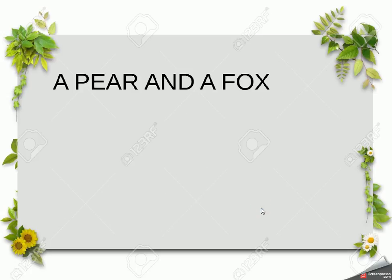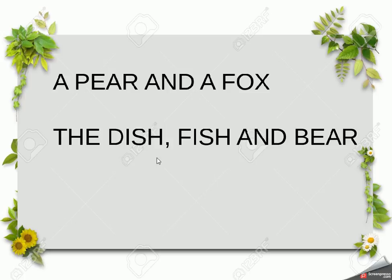Here are a few examples of where we use the 'air' sound: 'a pair and a fox'. Remember the 'ox' sound from the last video. This is where we're using the 'air' sound, and because I'm talking about two different things, rather than saying 'a pair, a fox', I've connected these two short statements together with 'and'. Next: 'the dish, fish and bear' — this is an example of using that 'air' sound with the E-A-R.